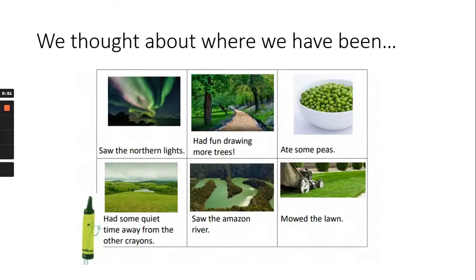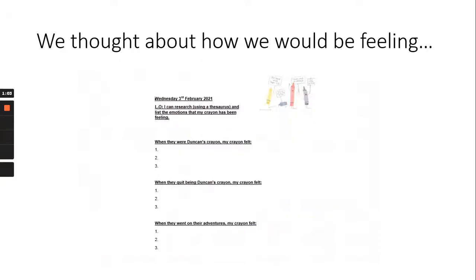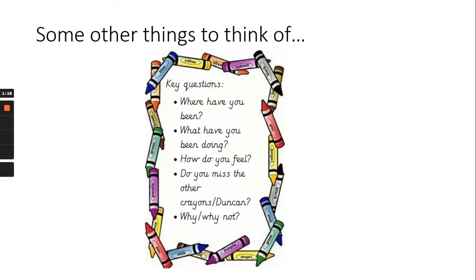So we've already thought about where we have been. I showed you this one the other day looking at my green crayon — I thought of all the different green things he could have been up to that he would have enjoyed doing since quitting and pulled all of those together. Then yesterday we were thinking about how our crayon would be feeling, adding words and more vocabulary. Today we're going to pull all of that together, with some other things to think about.